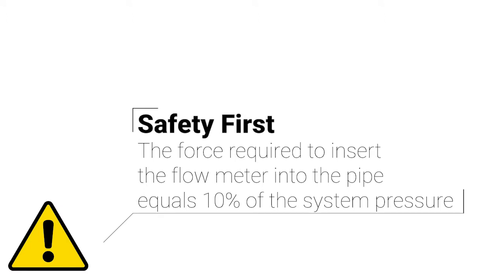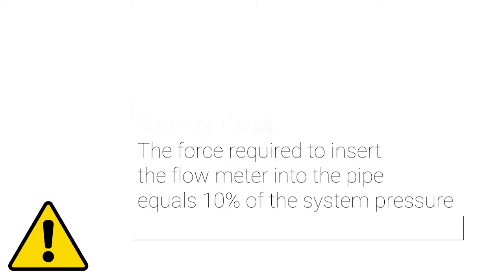Before beginning, be sure you have secure footing and are in a comfortable position to work with the flow meter. When working on an active line, you can expect one-tenth the system pressure to push up when installing or removing an insertion flow meter. Always keep your hand on top of the electronics enclosure when the clamping nut is loose.